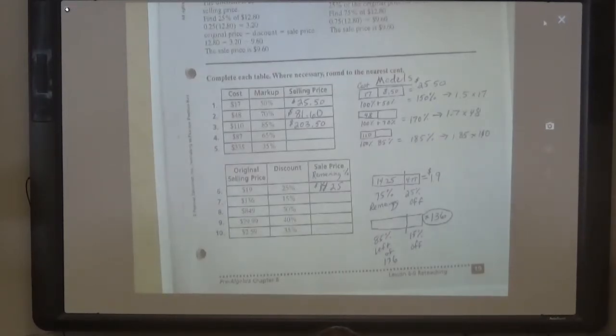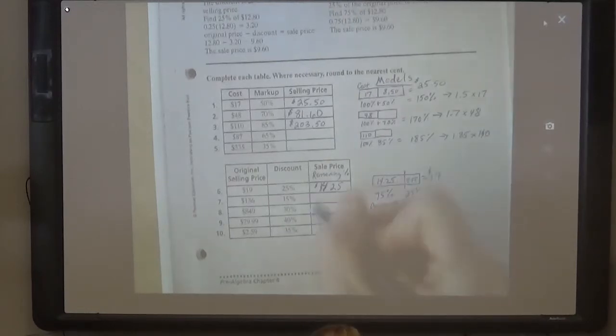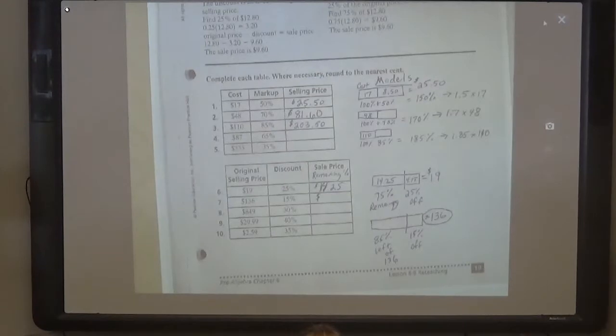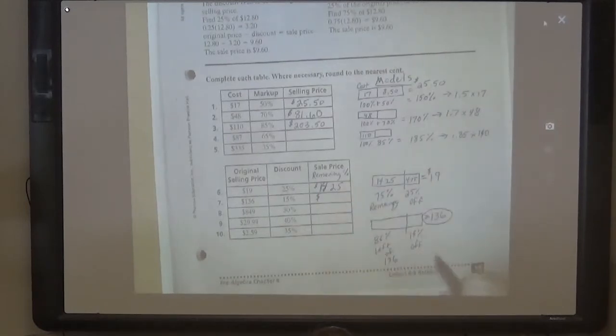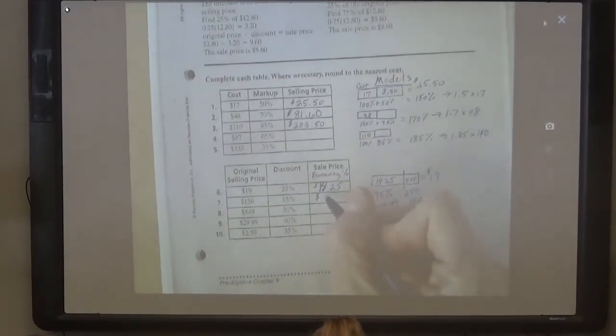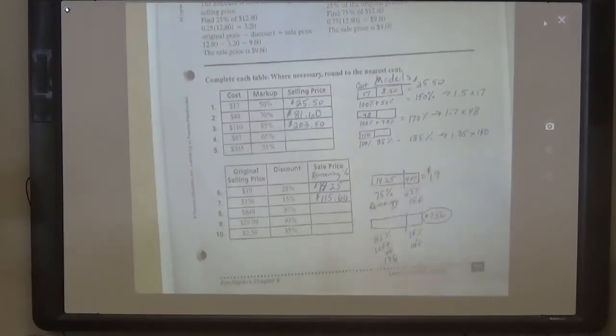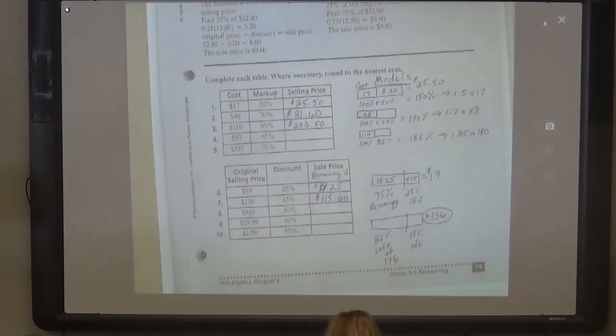Any questions on this? Do this last one. What is the sale price then? $15.75. Hmm, that's not what the book says. Did you guys get something? $15.60? Yeah, that's what the book says. Maybe you just hit a wrong number. $136 times 0.85. 85% is 0.85 as a decimal, isn't it? So 0.85 times $136 equals $115.60. Okay. Any other questions? Thank you.